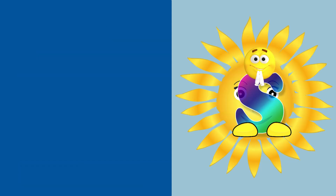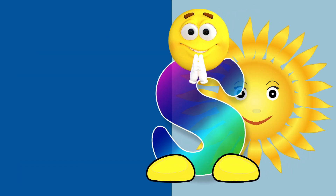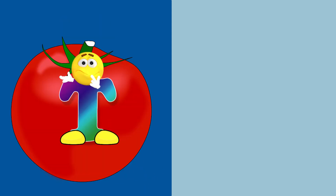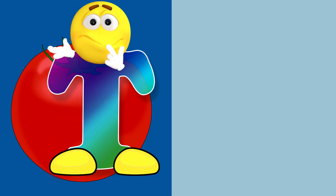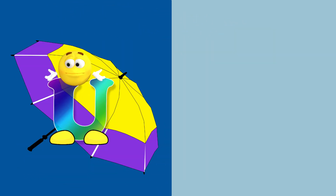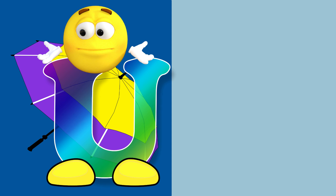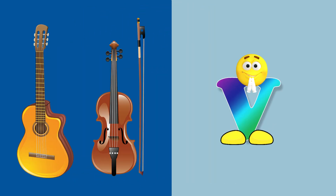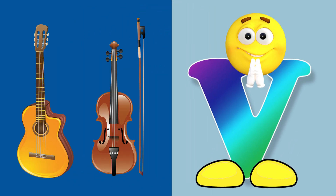S for sun. T for tomato. U for umbrella. V for violin.